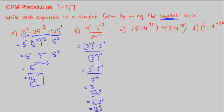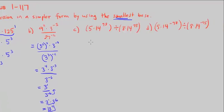Part C is asking us 5 times 14 to the 98th power divided by 8 times 14 to the 95th power. We can rewrite this division as 5 times 14 to the 98th divided by 8 times 14 to the 95th.